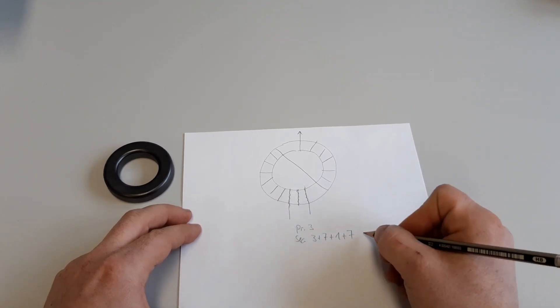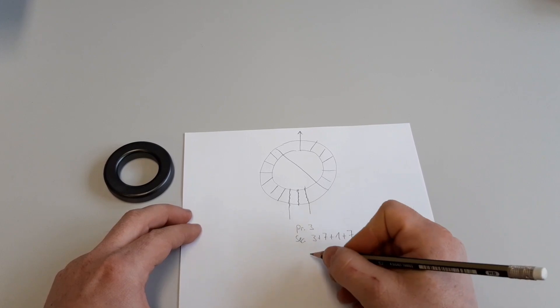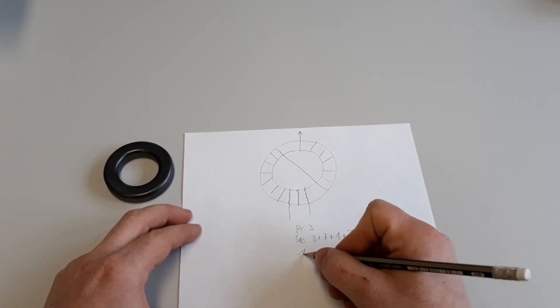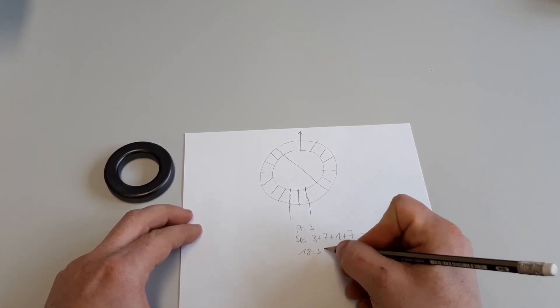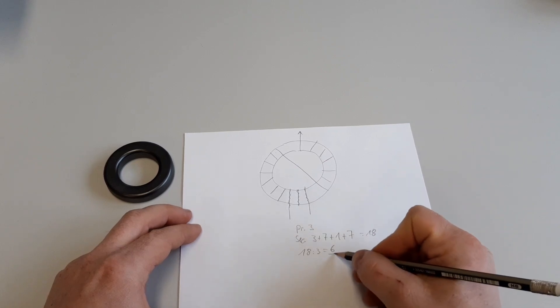We have here 18 divided by three, is six.